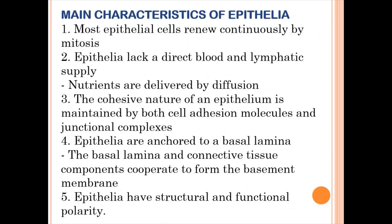Epithelial tissue can renew easily and they renew continuously by mitosis. This is a very important characteristic because epithelial tissue lines body surfaces, so there is constant degradation to its cells. Because of their degeneration by substances that pass through cavities, these cells continuously renew by mitosis. Epithelial tissue also lacks a direct blood and lymphatic supply — they are avascular. Oxygen and nutrients reach epithelial cells via diffusion.